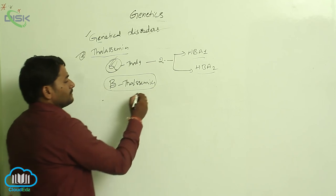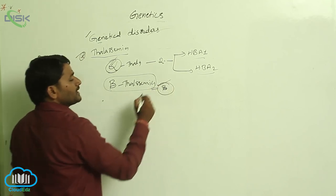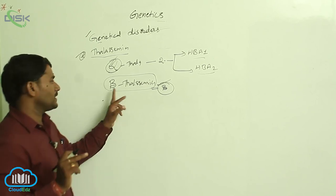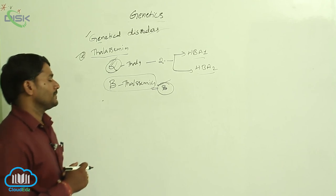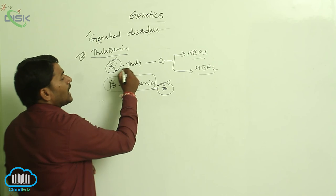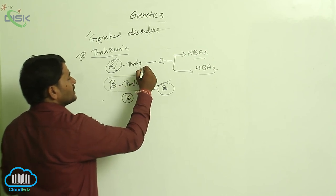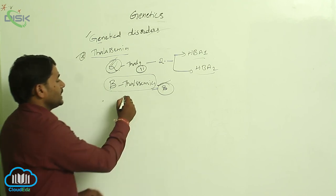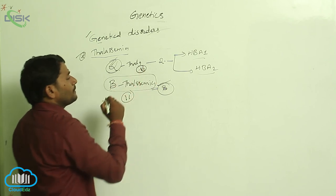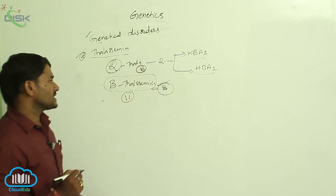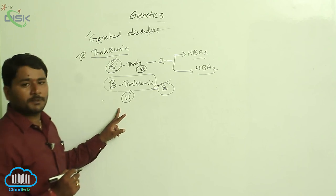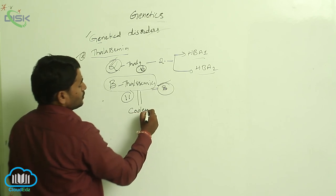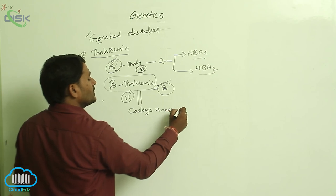Beta thalassemia means the beta polypeptide chain is not produced properly. One gene is responsible for the two beta polypeptide chains. The alpha polypeptide chain producing gene is located on the 16th chromosome, while the beta polypeptide gene is present on the 11th chromosome. Beta thalassemia is also called Cooley's anemia.